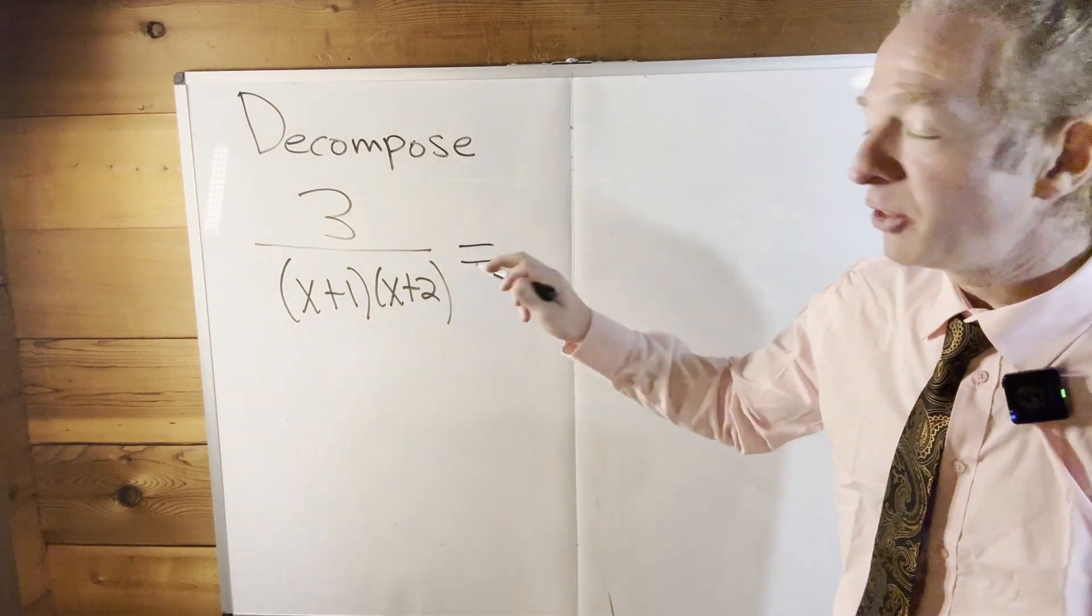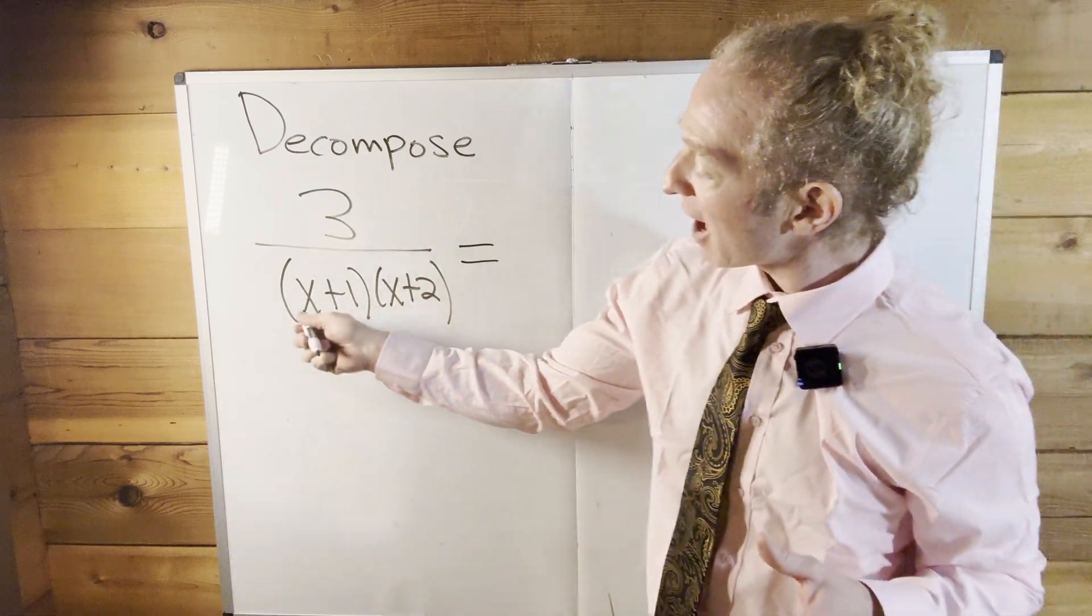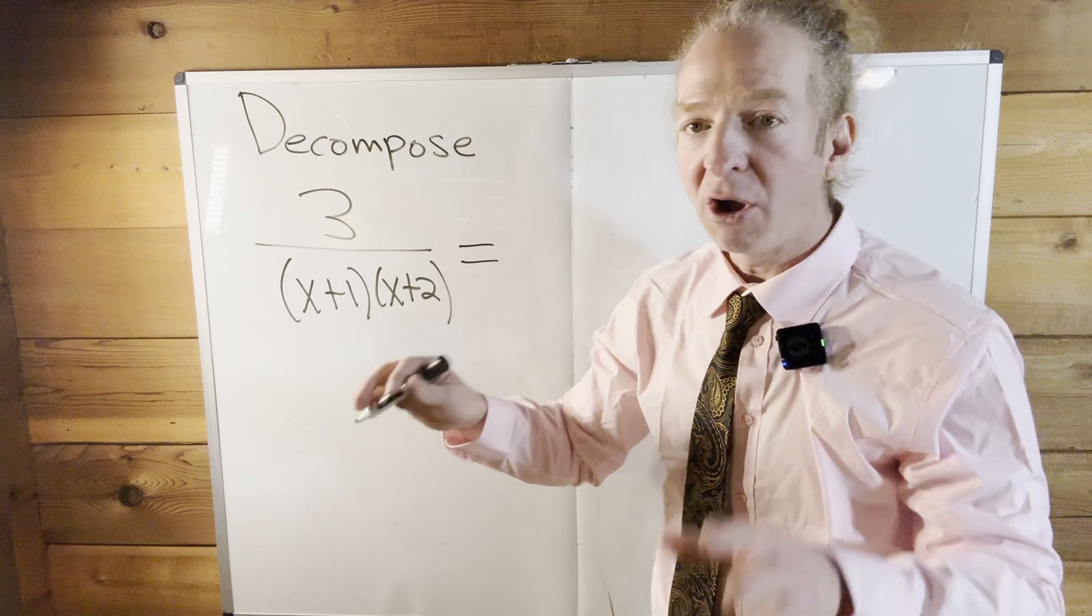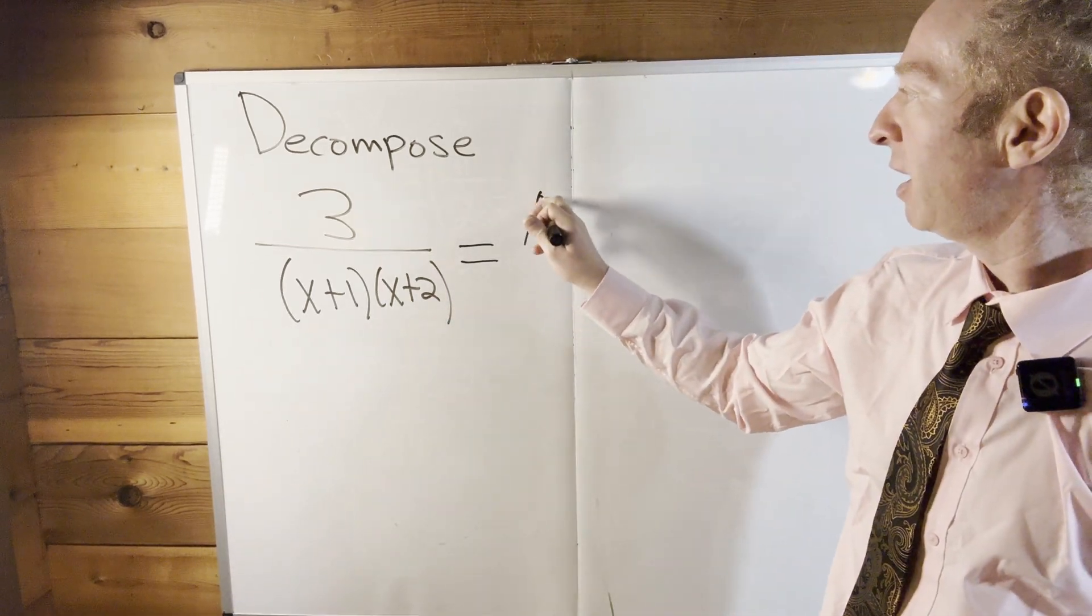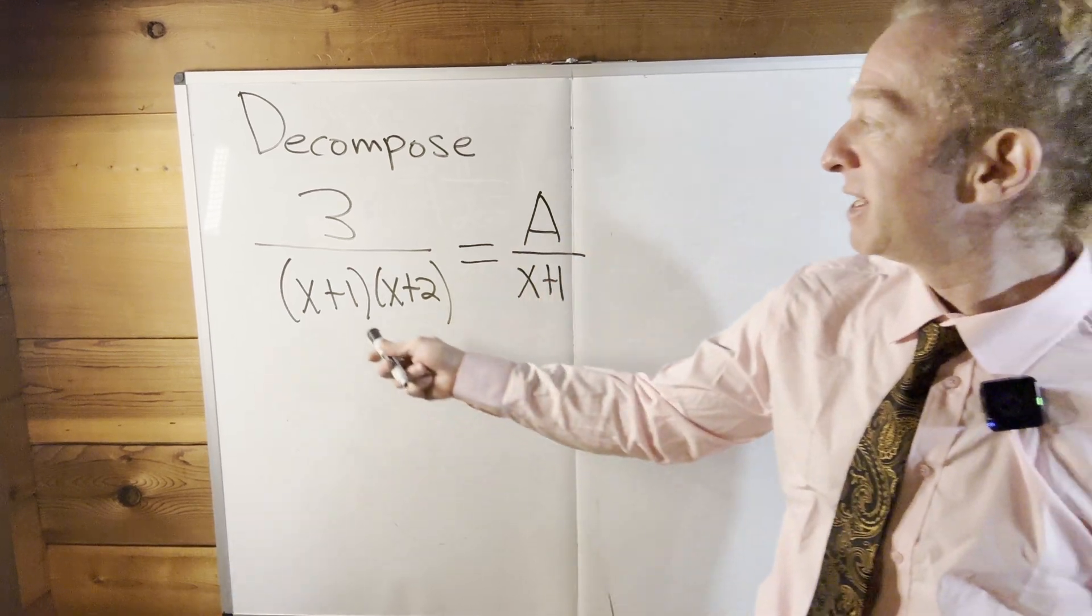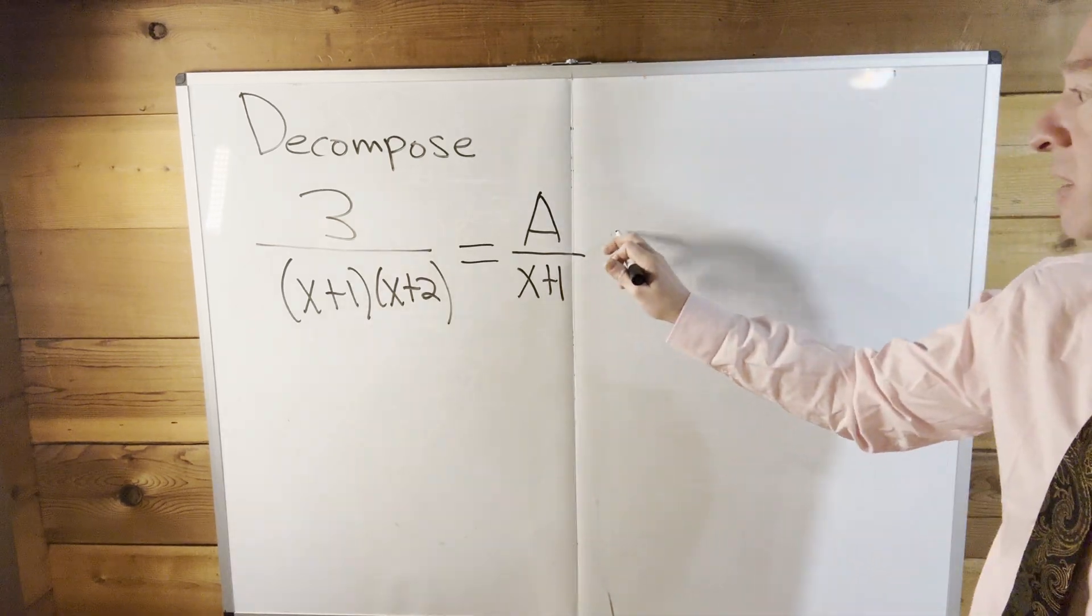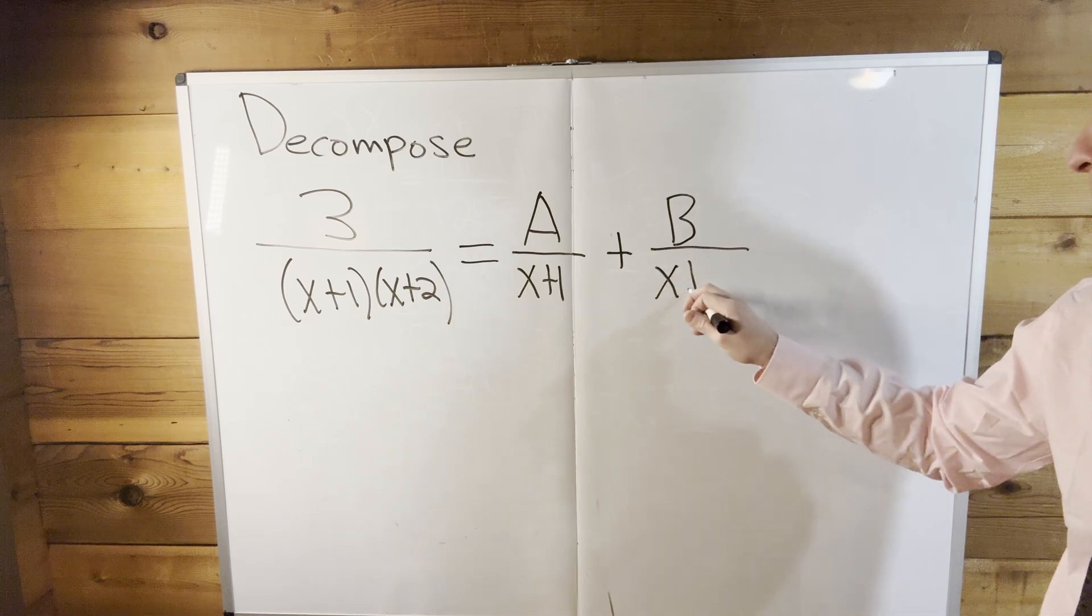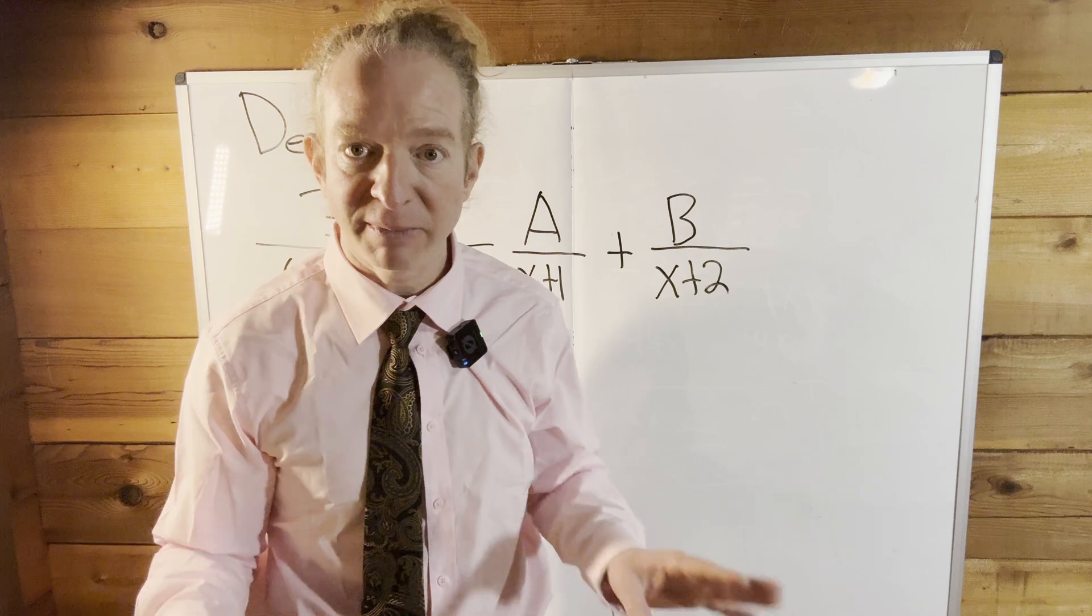So, first step in the partial fraction decomposition is to set it up. Whenever you have linear factors, all you do is write a capital letter and write the factor below it. A over x plus 1. That takes care of this x plus 1. Now we go to the x plus 2, so it'll be plus B over x plus 2. So now we're going to find A and B, and we're done.